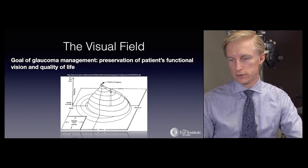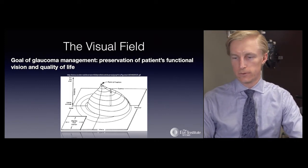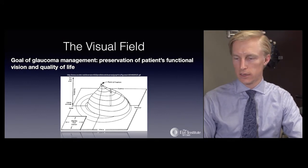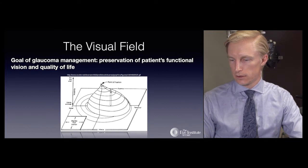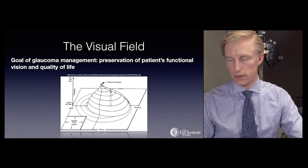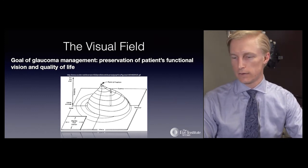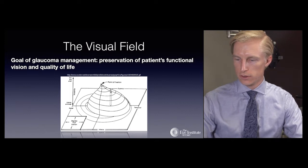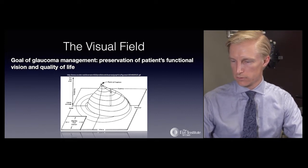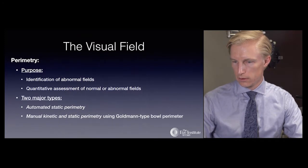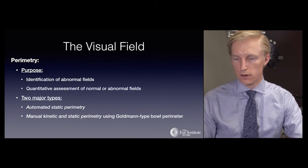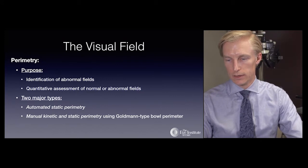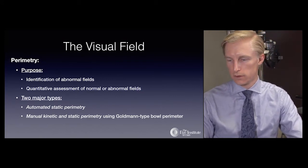The overall goal of glaucoma management is preservation of the patient's functional vision and quality of life, and the most important assessment of that is the visual field. The hill of vision diagram depicts greater detail of vision at the fovea at the top of the hill, decreasing as we move outward. The main purposes of perimetry are to identify anyone with an abnormal visual field and to provide a quantitative assessment that can be followed over time.